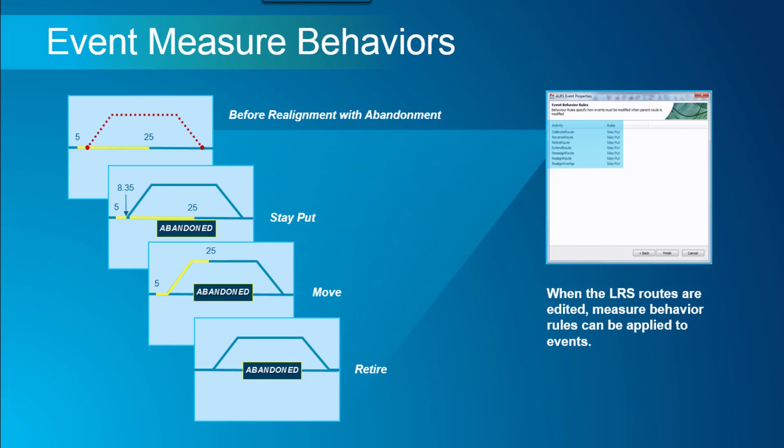We also have event measure behaviors. Because of route editing activity, events can geographically move along with a route or change location. Event behaviors are a set of rules that users can configure so that when a route is edited — geometrically or measure-wise — events react based on that configuration. The behaviors we support are move, retire, and stay-put, and these can be configured at the event level.